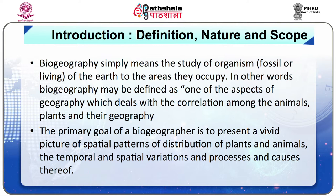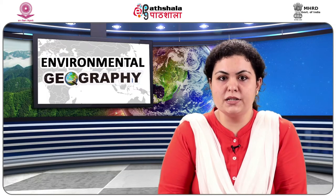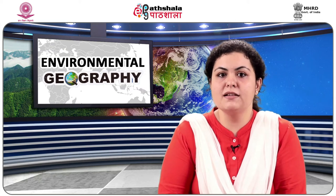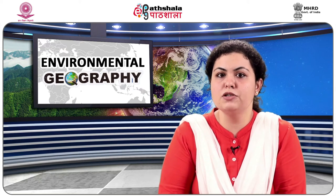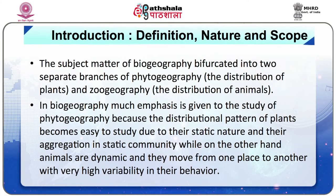The primary goal of a biogeographer is to present a vivid picture of spatial patterns of distribution of plants and animals, the temporal and spatial variations, and processes and causes thereof. The basic spatial unit for biogeographical studies is the biosphere, which is the largest ecosystem and is segmented into numerous ecosystems such as mountain ecosystem, crop ecosystem, delta ecosystem, and grasslands ecosystem. The subject matter of biogeography has further been bifurcated into two branches: phytogeography, the distribution of plants, and zoogeography, the distribution of animals.